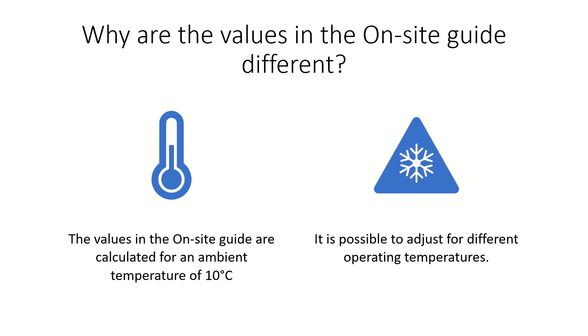So the next question is, why are the values in the on-site guide different? The answer is because the values in the on-site guide are calculated based on an ambient temperature of 10 degrees C. This makes sense because it's often colder when working on-site, and so this can be a useful guide.